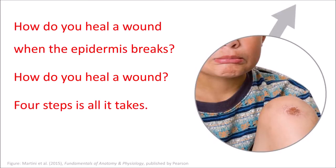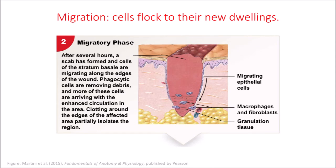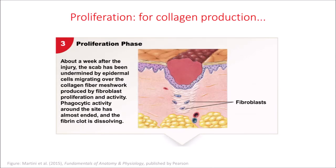How do you heal a wound when the epidermis breaks? How do you heal a wound? Four steps is all it takes: inflammation — there's clotting and there's swelling; migration — cells flock to their new dwellings; proliferation for collagen production.